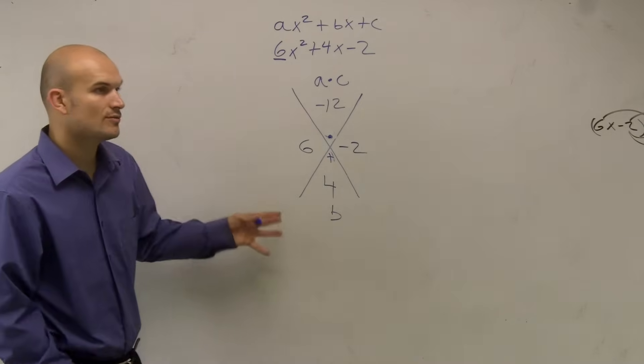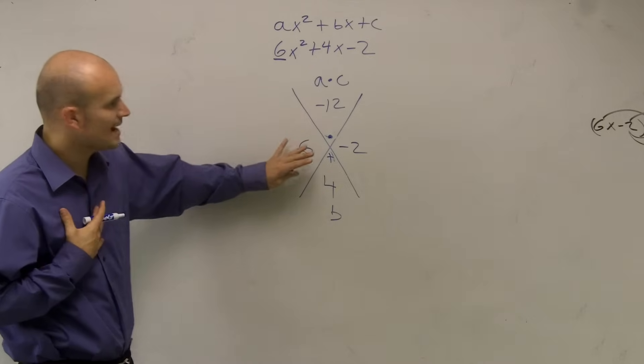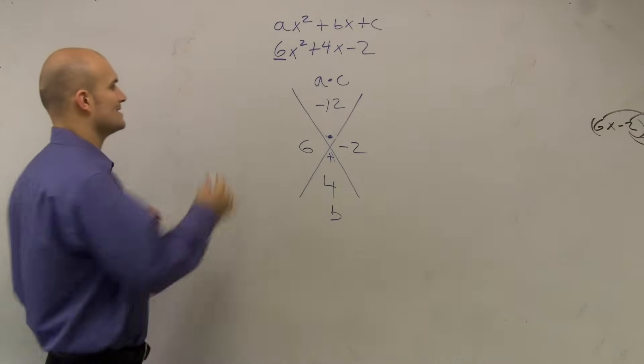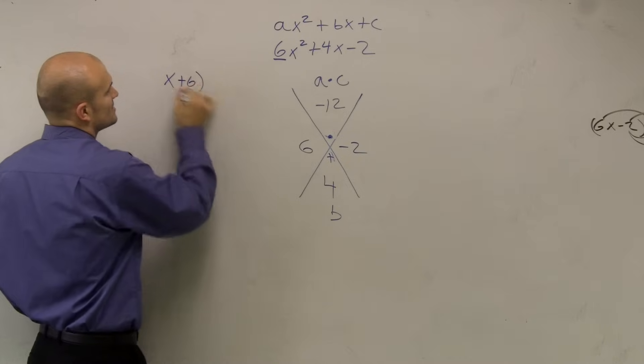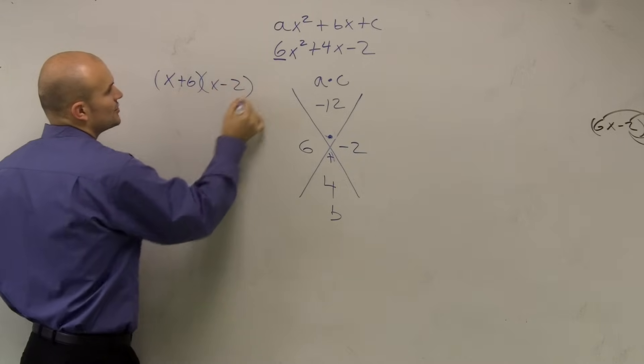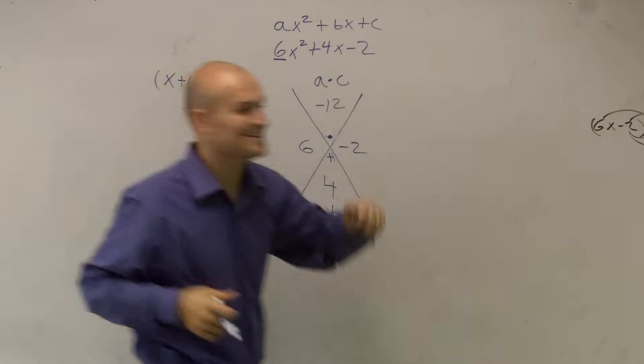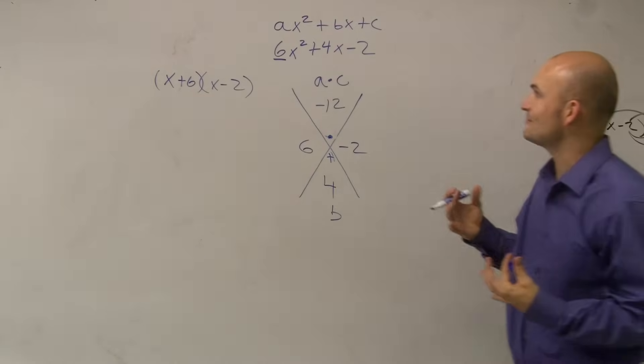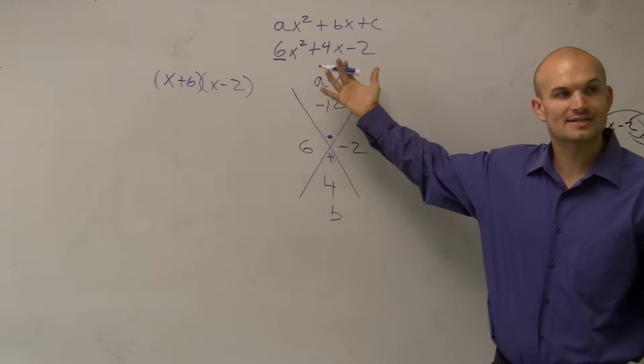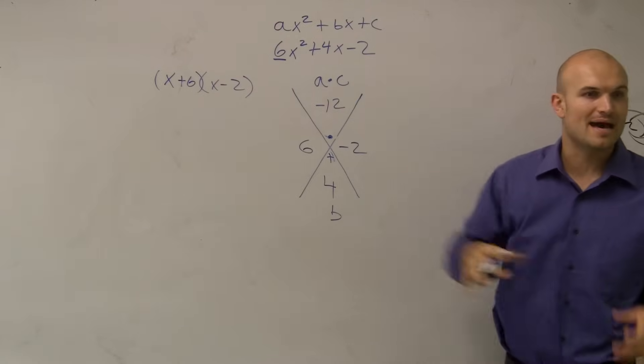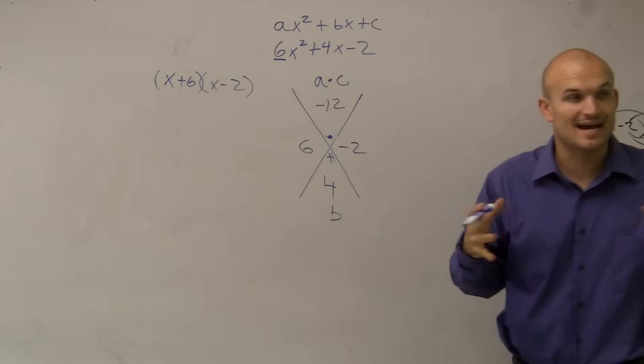Now we've got to make sure we remember, now what we next want to do is we can't say it's going to be x plus 6 times x minus 2, because that is not the same. Remember as a product, remember when I say factor, we're writing this as a product of its two factors. The mathematical equivalent has not changed.